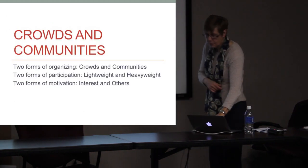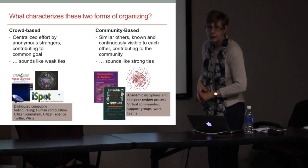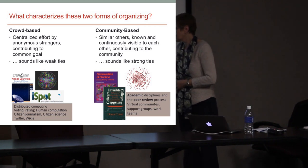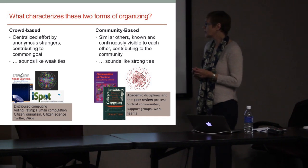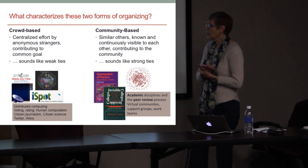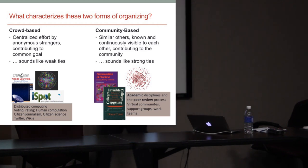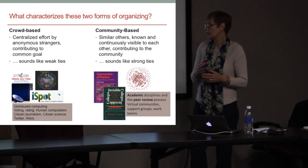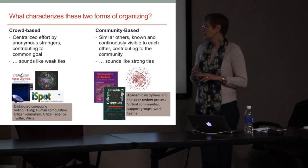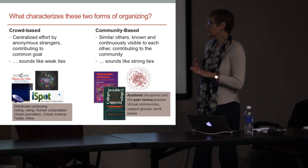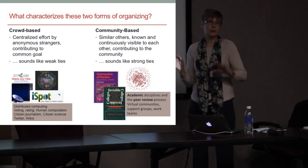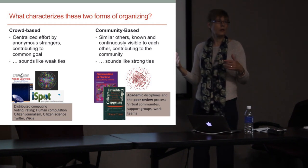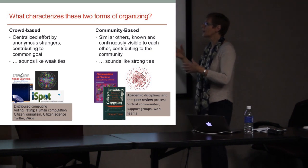We've been spending a lot of time looking at communities — how on earth do online communities work? — leaning back on the ideas of invisible colleges and communities of practice to understand how people work together. Then these crowds pop up. There are crowd initiatives such as SETI, iSpot as a nature watch, distributed computing, voting and rating on news sites, human computation, citizen journalism, citizen science, Twitter, wikis — a centralized effort by anonymous strangers contributing to a common goal. That sounds a bit like weak ties.